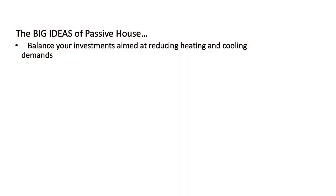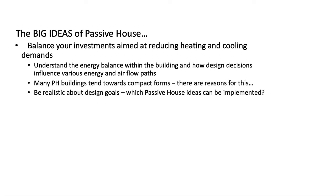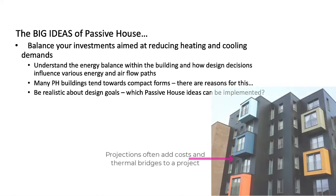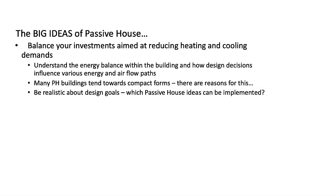The next big idea in passive house is that we want to balance our investments aimed at reducing the heating and cooling demands within the building. We want to do this by understanding the energy balance within the building and how design decisions influence various energy and airflow paths. Many passive house buildings will tend towards compact forms. Non-compact buildings, junctions, and projections are all places where we get additional cost and the risk of thermal bridges.